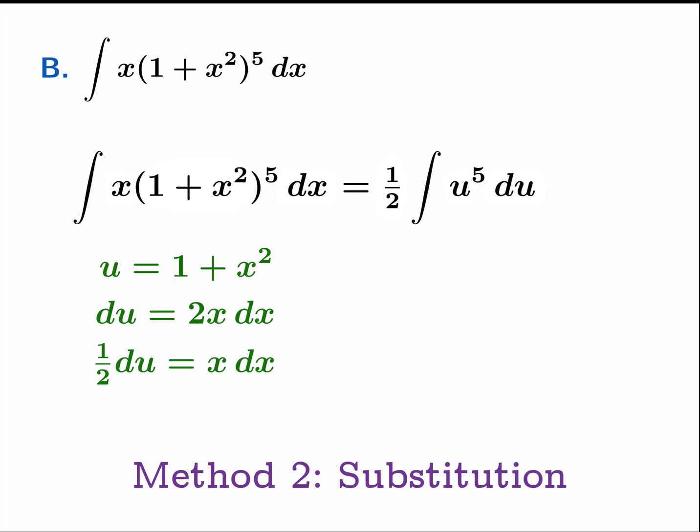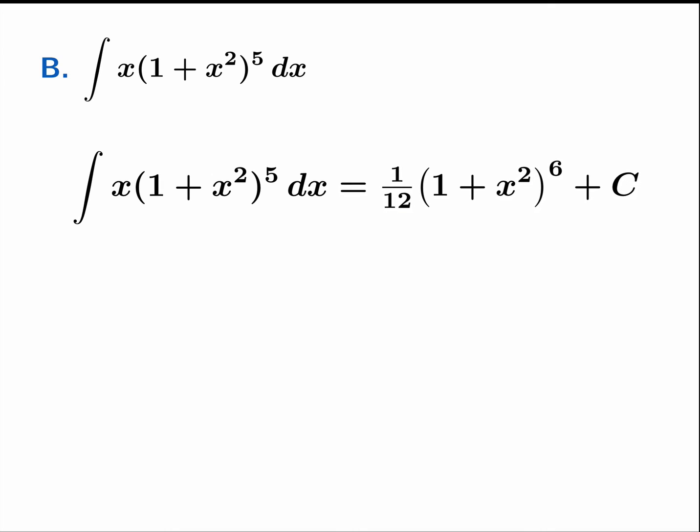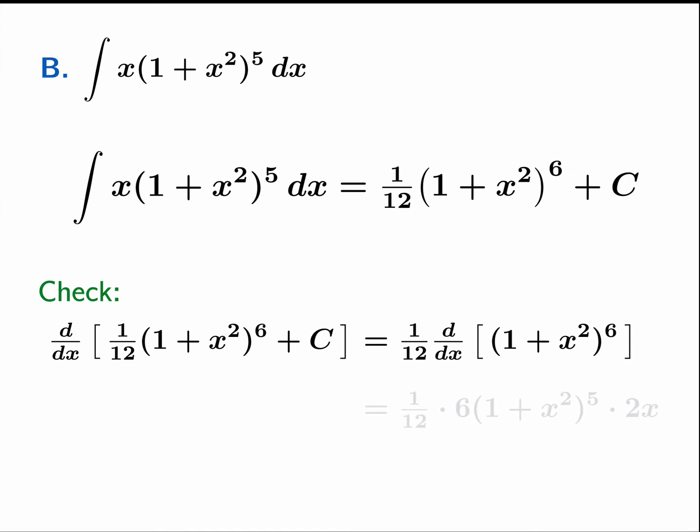The antiderivative of u to the 5th is 1 over 6 u to the 6th. And so we get this antiderivative. And then we substitute back in 1 plus x squared for u. And there is our antiderivative. Once again, this is something we can easily check. So we're going to take the derivative. The derivative of a constant is 0. The 1 12th slides out. And we get the power rule in conjunction with the chain rule. With some simplification gives us the function we were looking for. So indeed we have found the antiderivative of x times 1 plus x squared to the 5th power.